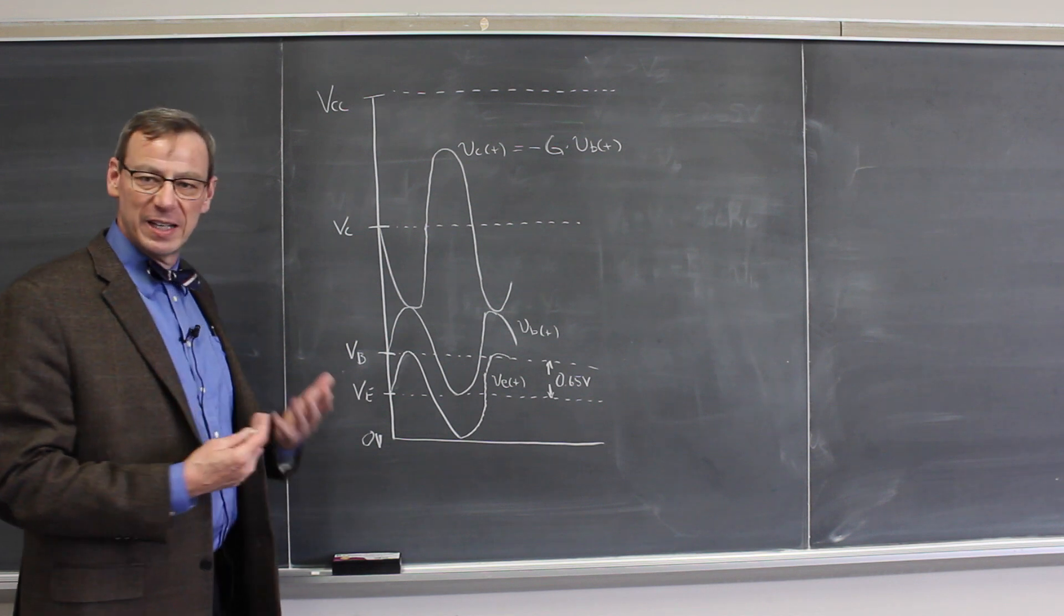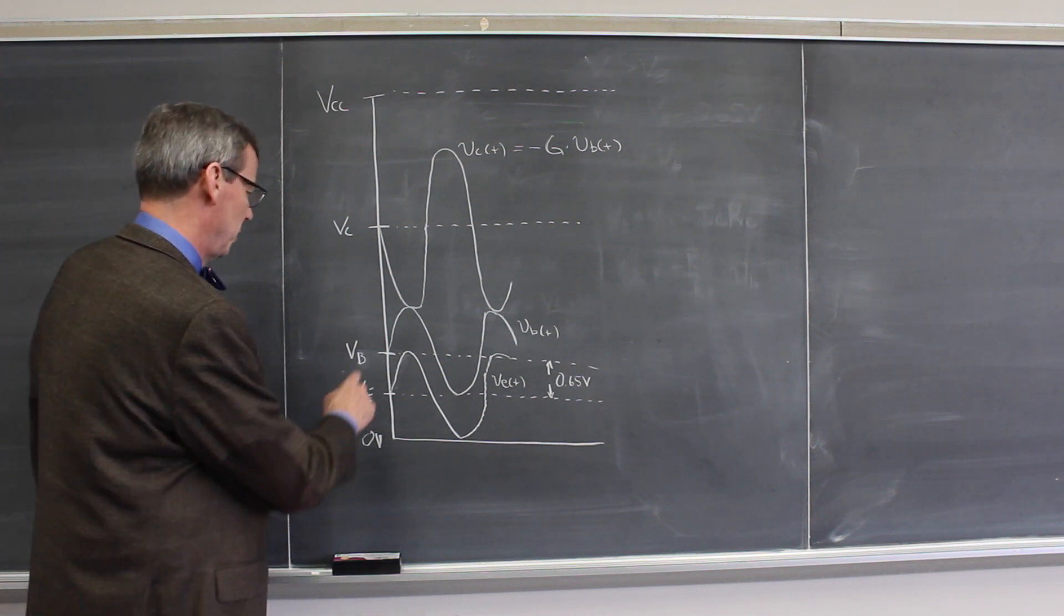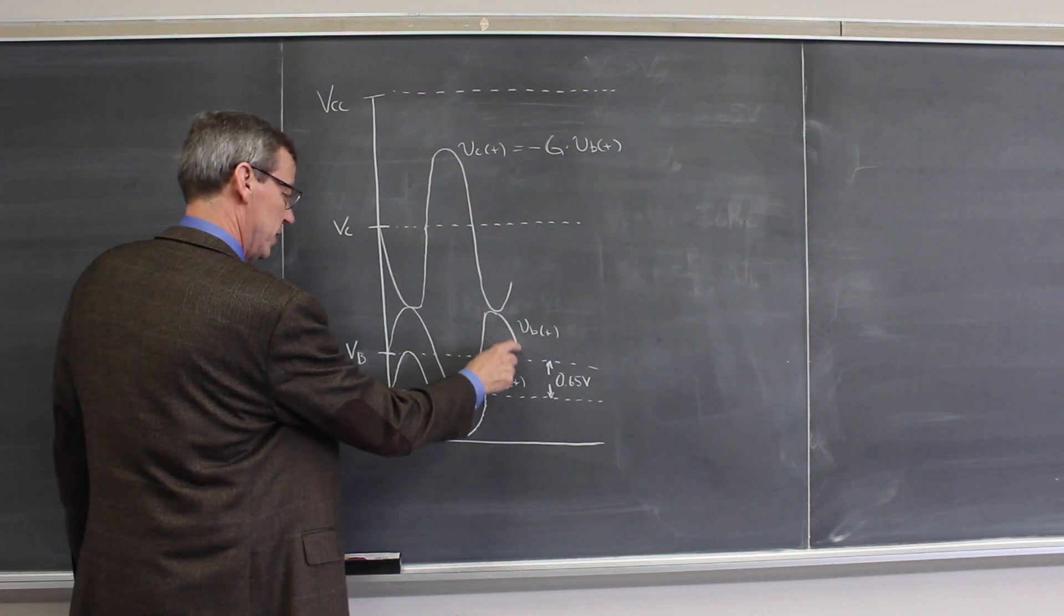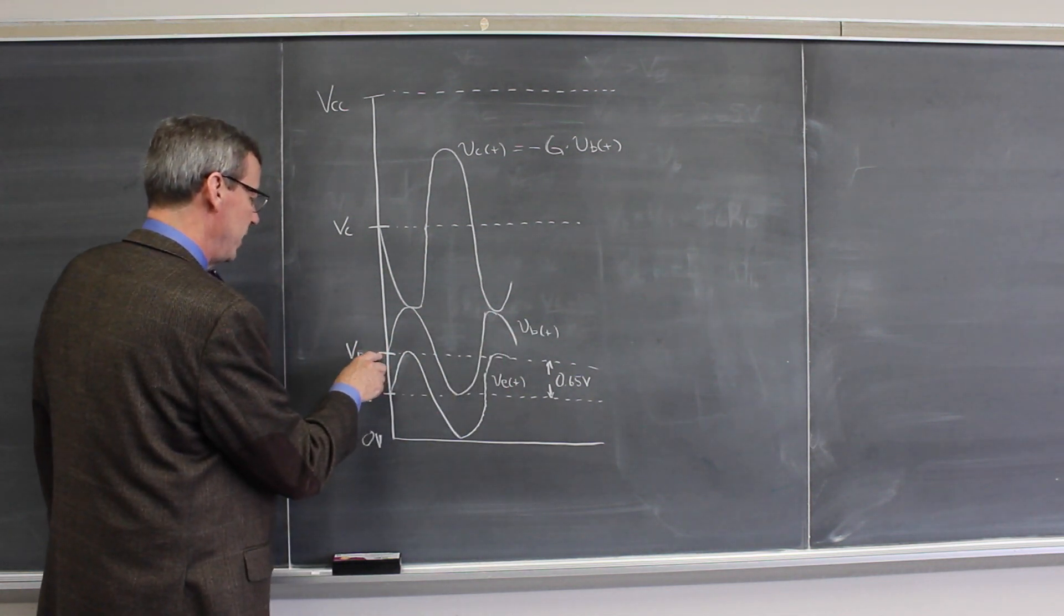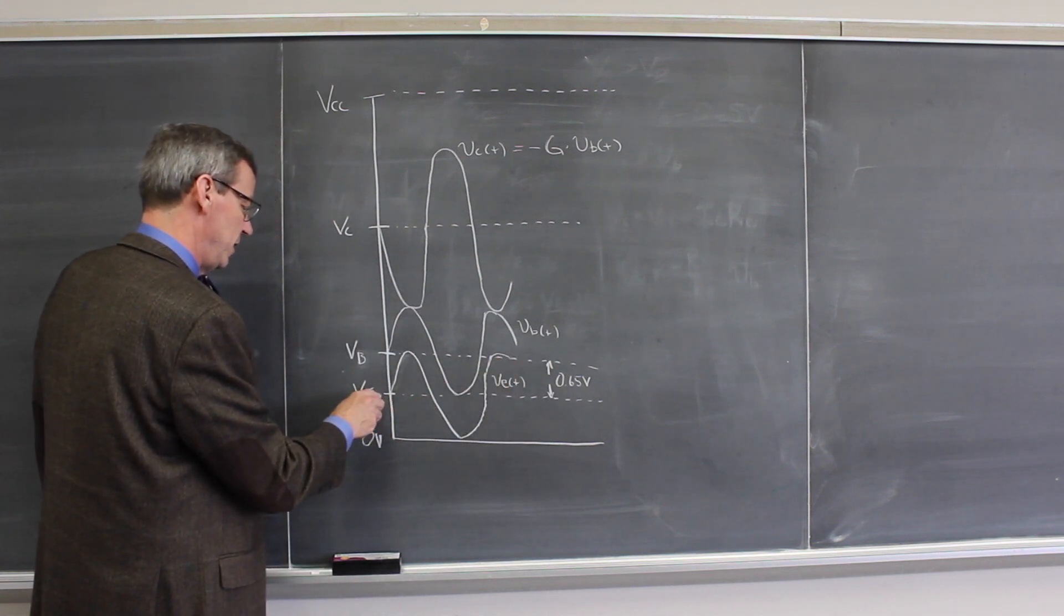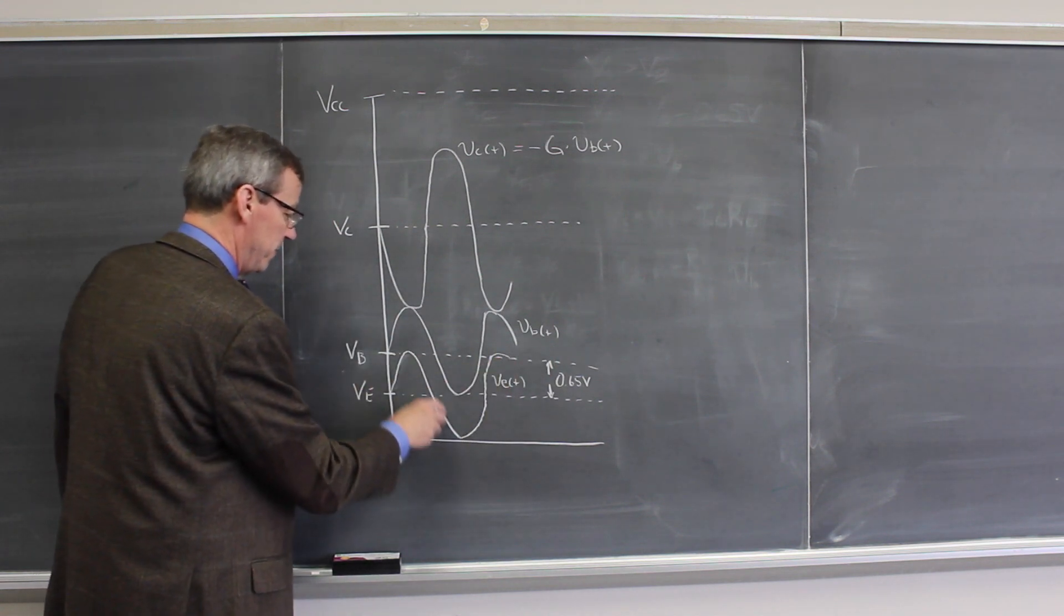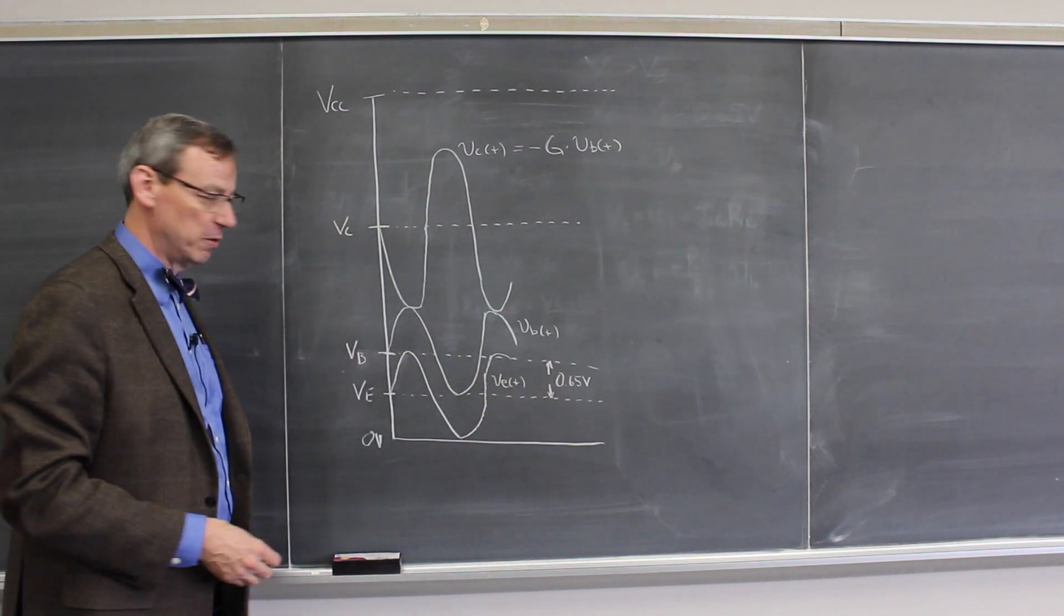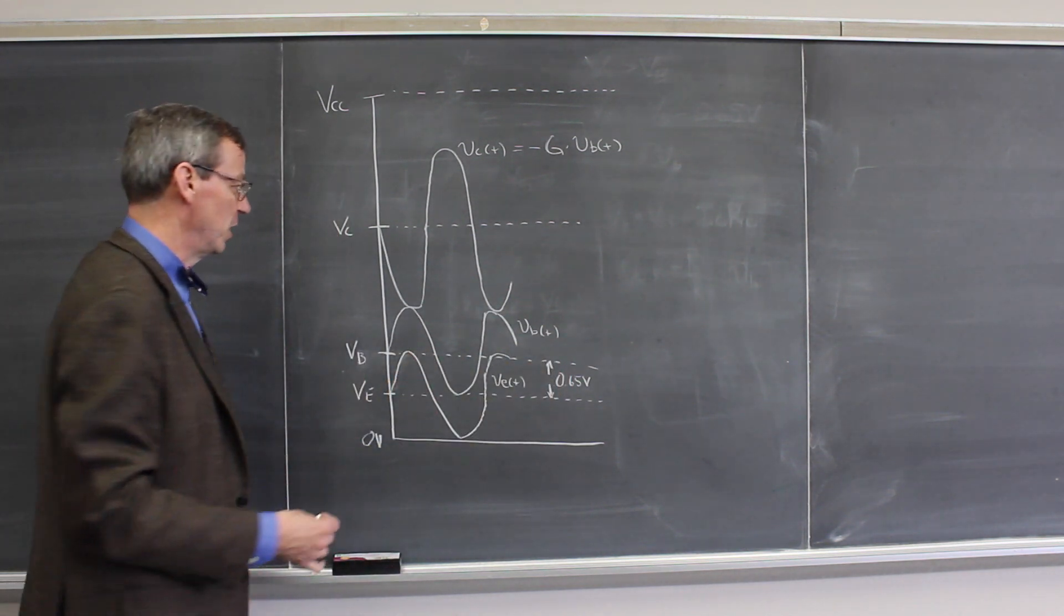So now if we switch to looking at the signals that we had on the circuit, we put in an AC base voltage here, the input signal that's there, and it's riding on top of a DC base voltage level. There's an emitter AC signal which is riding on top of the emitter level, and the difference between those two is 0.65 volts. So that's what we saw from the emitter follower.